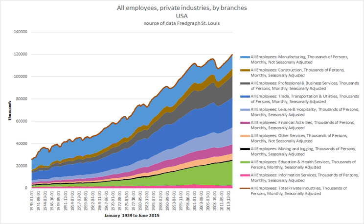Wage labor is the socio-economic relationship between a worker and an employer, where the worker sells their labor under a formal or informal employment contract. These transactions usually occur in a labor market where wages are market determined. In exchange for the wages paid, the work product generally becomes the undifferentiated property of the employer, except for special cases such as the vesting of intellectual property patents in the United States where patent rights are usually vested in the original personal inventor.